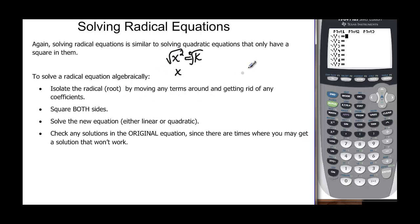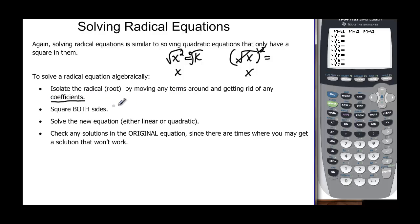Now we're going to be starting with a radical, and we want to get rid of the radical. To do that we would square, and the square will cancel the square root, and we'll get x. So we need to isolate the radical by moving things around — that includes coefficients. Then once we get that isolated, we can square both sides. We have to do it to both sides, and then we'll have a linear or quadratic equation to solve.